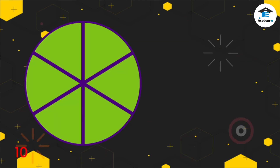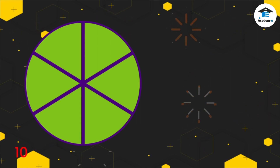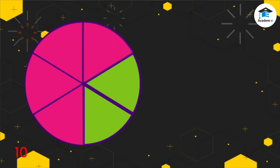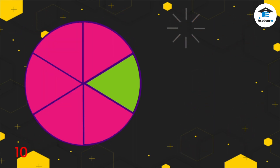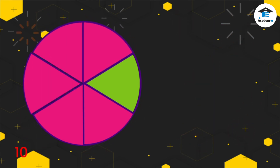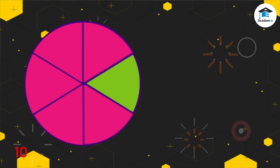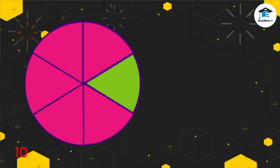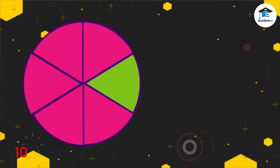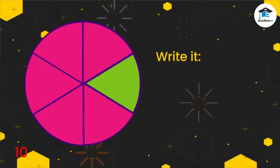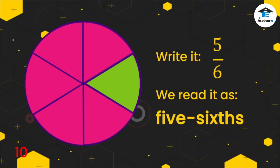Here's another example. Look at the figure below. It's divided into 6 equal parts. We are going to color 5 sixths of the circle. In this figure, we colored 5 out of 6. How many parts are being shaded? 1, 2, 3, 4, 5. There are 5 parts that are shaded. How many equal parts are there? 1, 2, 3, 4, 5, 6. There are 6 equal parts. We write it like this, and we read it as 5 sixths.